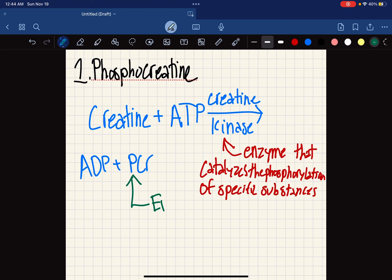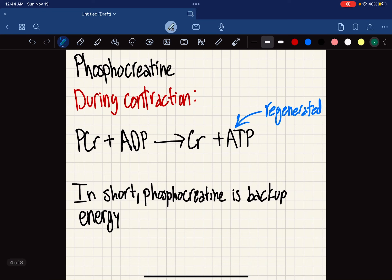During contraction or when you need energy, that phosphocreatine will then dephosphorylate and ATP is thereby regenerated. In short, phosphocreatine is backup energy.